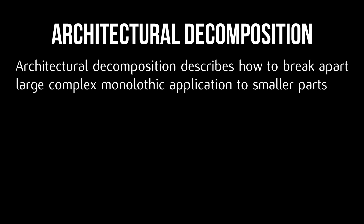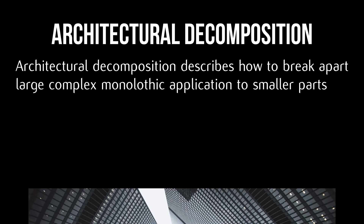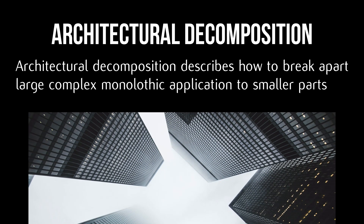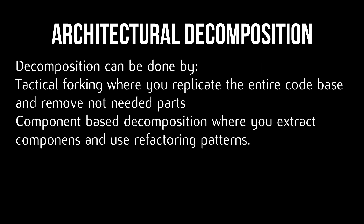Architectural decomposition describes how to break apart a large complex monolithic application into smaller parts. Decomposition can be done by tactical forking, where you replicate the entire code base and remove unneeded parts, or by component-based decomposition, where you extract components and use refactoring patterns.